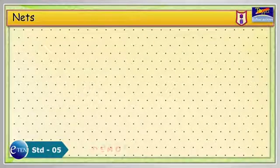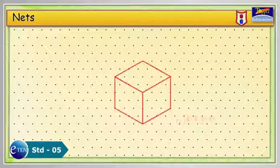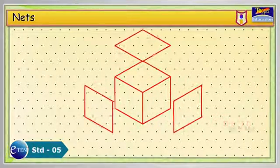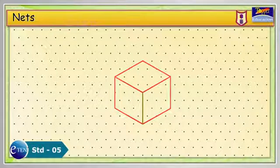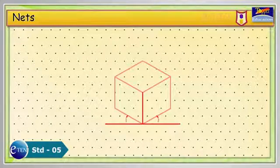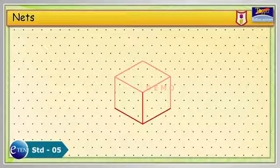Isometric is a method of producing pictorial view of an object showing all three faces of the object simultaneously. The vertical lines remain vertical, whereas horizontal lines are inclined at 30 degrees. The three coordinate axes are called isometric axes.